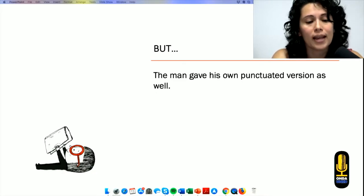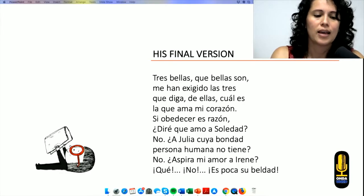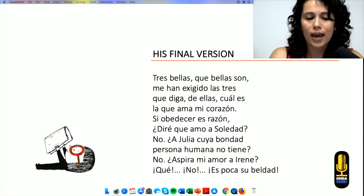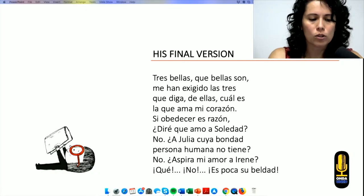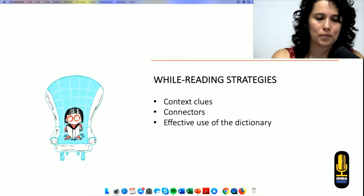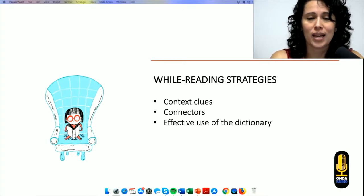But the man gave his unpunctuated version as well. And this was his final version. Tres bellas que bellas son. Me han exigido las tres que diga de ellas cuál es la que ama mi corazón. Si obedecer es razón, diré que amo a Soledad. No. A Julia, cuya bondad persona humana no tiene. No. Aspira mi amor a Irene. Que no es poca su beldad. I don't have to talk much about this. We get to see how important typographical clues are in a text.